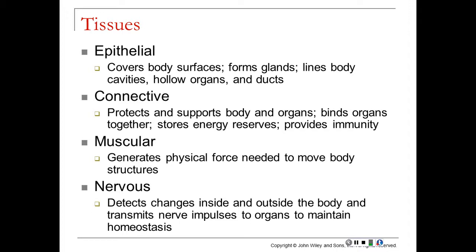The four tissue types are epithelial, connective, muscular, and nervous. Epithelial tissues are our coverings and linings — they also make up the glands, line our hollow organs, and line our ducts. Your skin and the inner lining of your stomach are both examples of epithelial tissue. Connective tissue protects and supports the body and organs, provides immunity, stores energy, and can bind organs together.